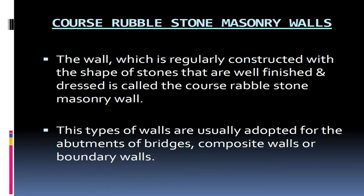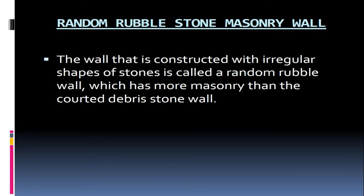Coarse rubble stone masonry walls. The wall which is regularly constructed with the shape of stones that are well finished and dressed is called the coarse rubble stone masonry wall. This type of wall is usually adopted for the abutments of bridges and composite walls or boundary walls. Random rubble stone masonry wall. The wall that is constructed with irregular shapes of stones is called a random rubble wall, which has more masonry than the coarse rubble stone wall.